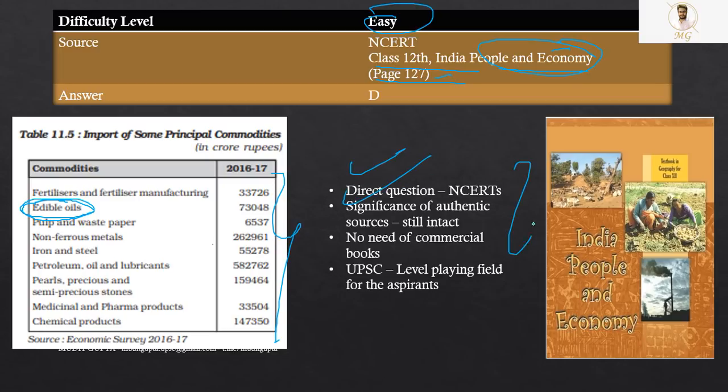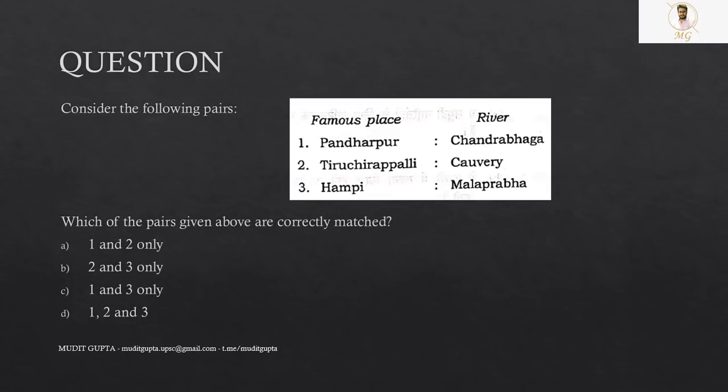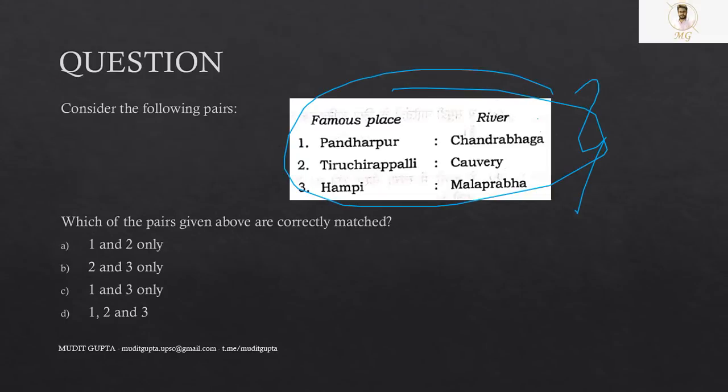So another question of geography that can be directly solved from 12th class NCERT. Now again, till now, we have focused only upon NCERTs. We haven't focused upon any commercial book till now. All the questions can be directly solved from NCERTs. Next is this in which we have to match the famous places with their rivers.